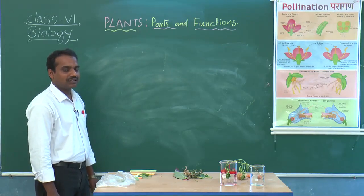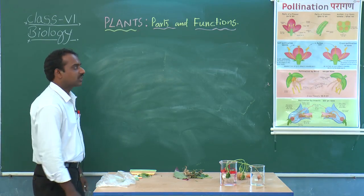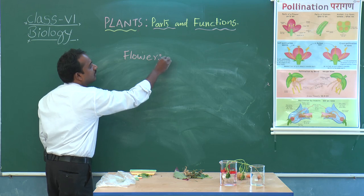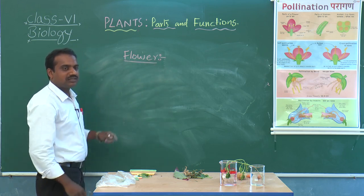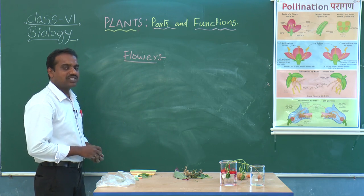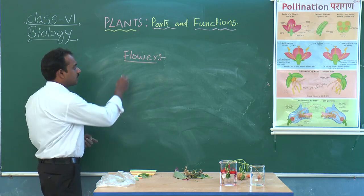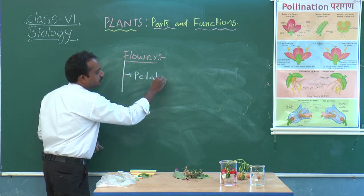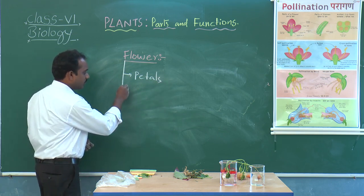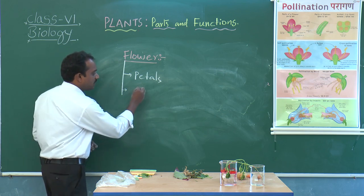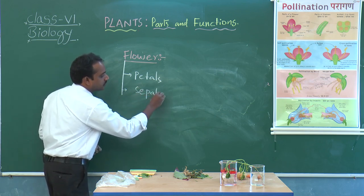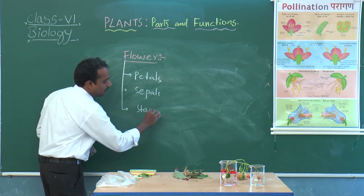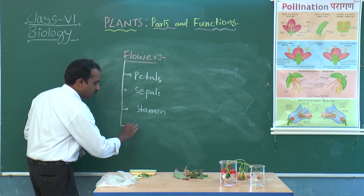Let us discuss the most attractive part of the plant called as flower. Flower is the most attractive part of the plant, which consists different parts like petals, sepals, stamen and pistil.